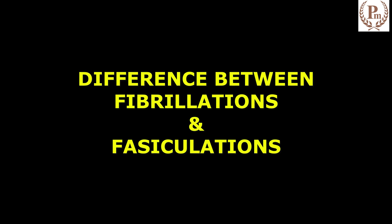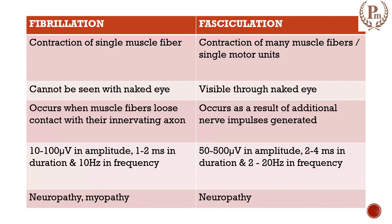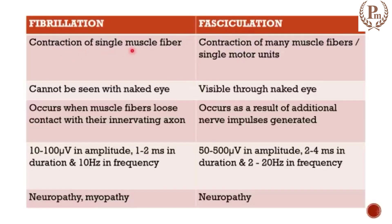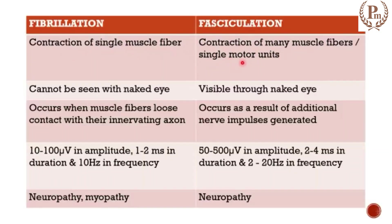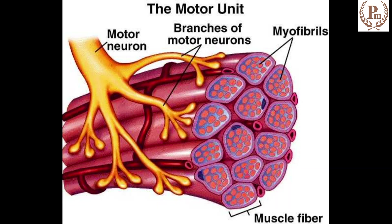Let us study about the difference between fibrillations and fasciculations. Here are a few differences. Fibrillation is due to contraction of a single muscle fiber, whereas fasciculation is due to contraction of many muscle fibers, or a motor unit. A motor unit means a single nerve fiber supplying to many muscle fibers.